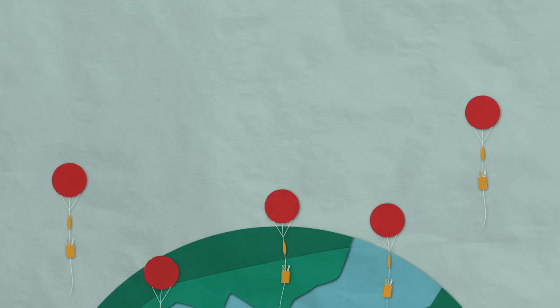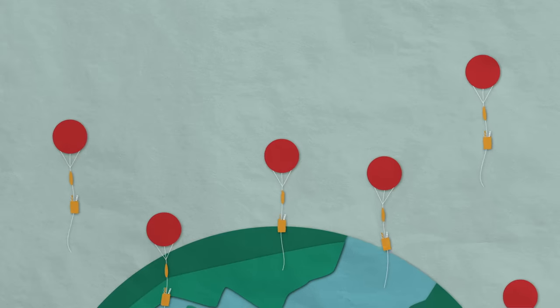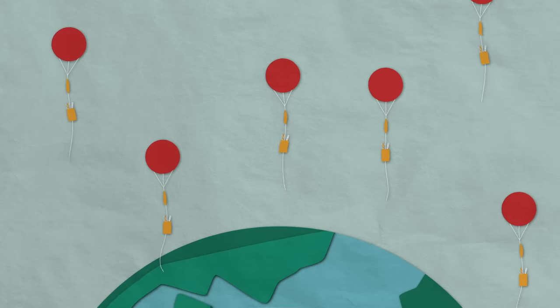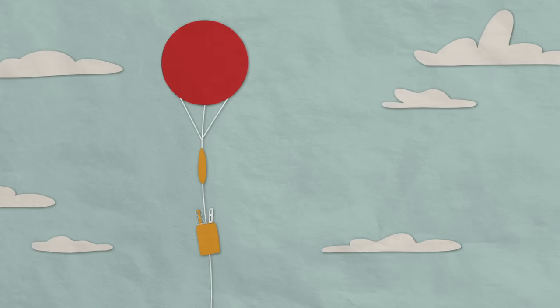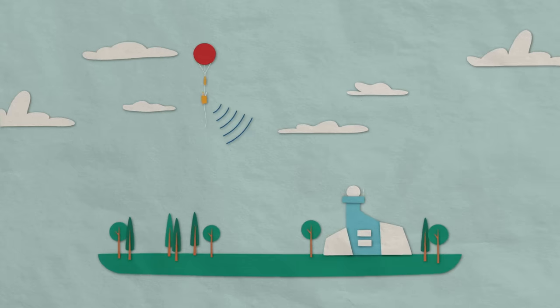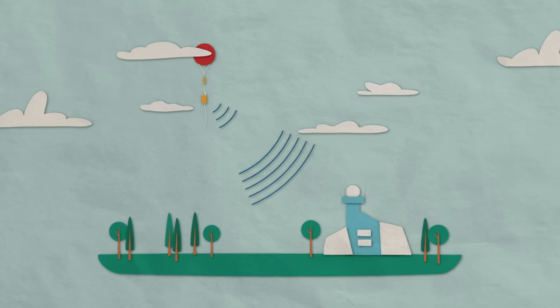Twice every day, meteorologists from over 800 stations around the globe release balloons into the atmosphere. These balloons carry instruments called radiosondes, which measure initial conditions and transmit their findings to international weather centers.